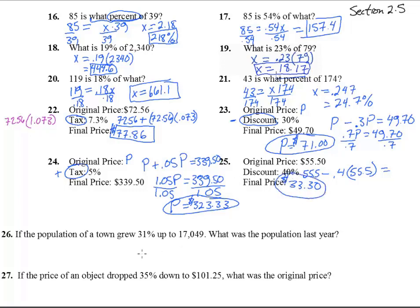Number 26, a population of a town grew 31% up, so that means we're going to be adding this 31% up to, this is our end result, this is our final here. We're looking for the population last year, so the population was last year, and it grew 31% of what? Well, of that population, this is why we need the equation here, up to 17,049.